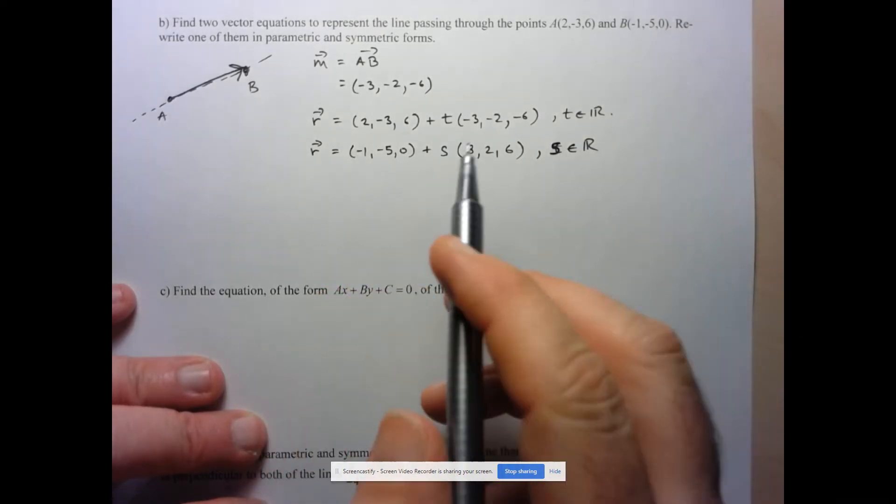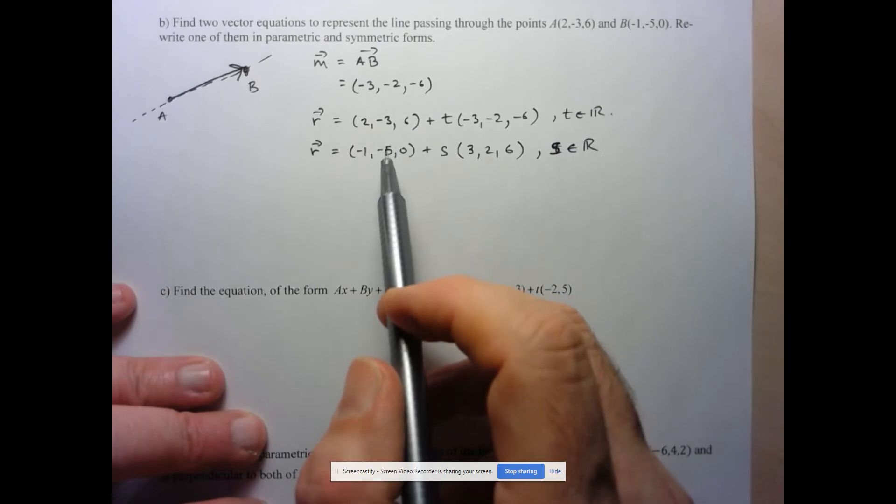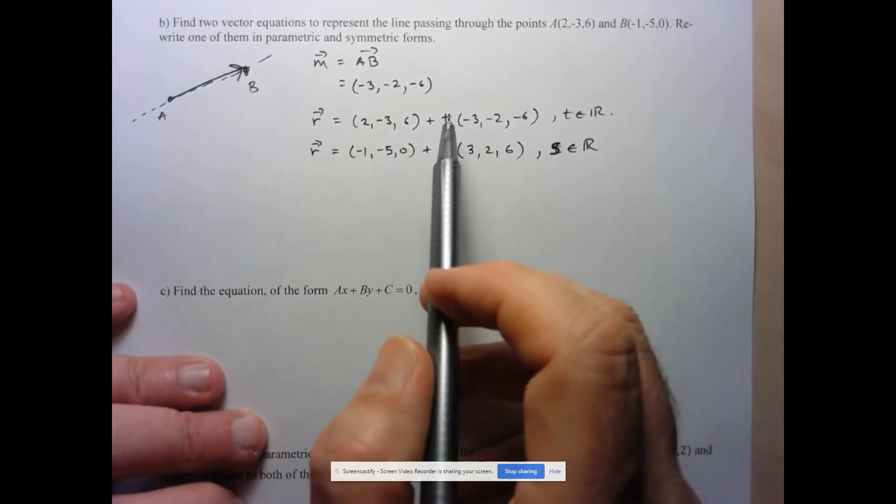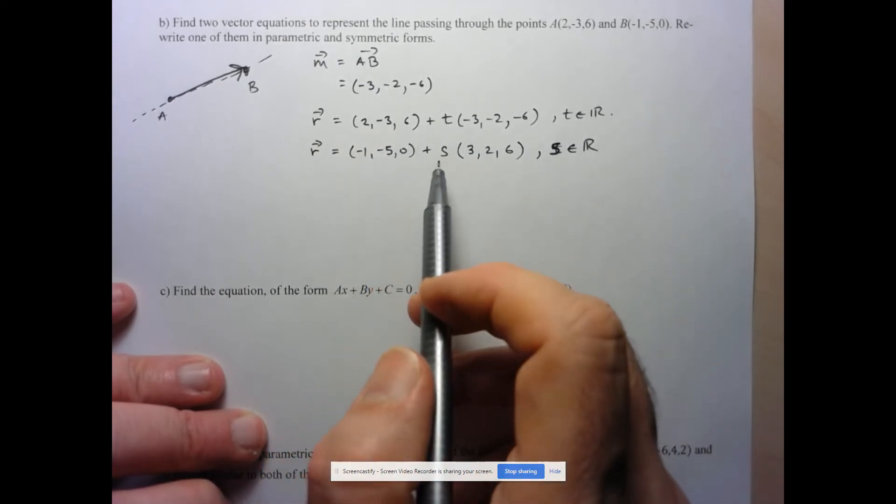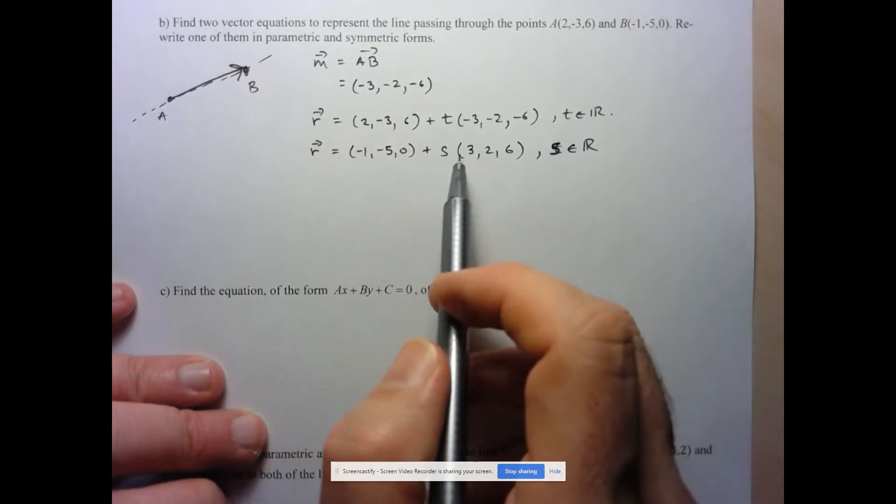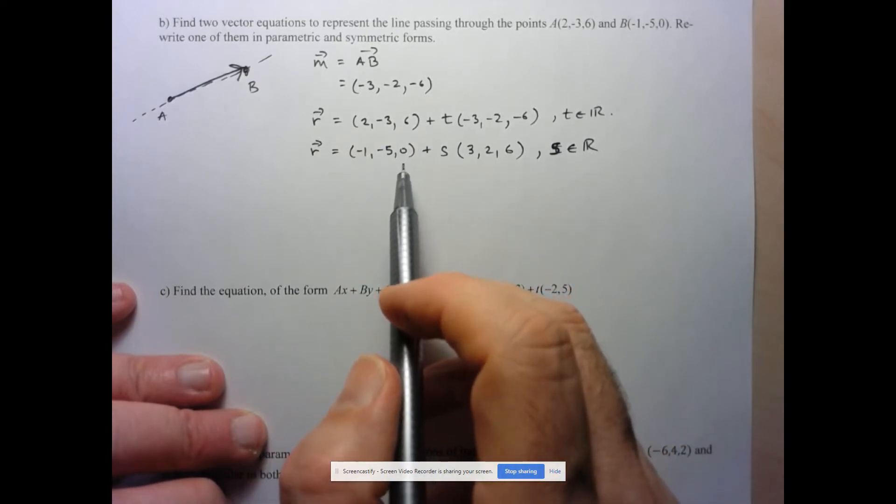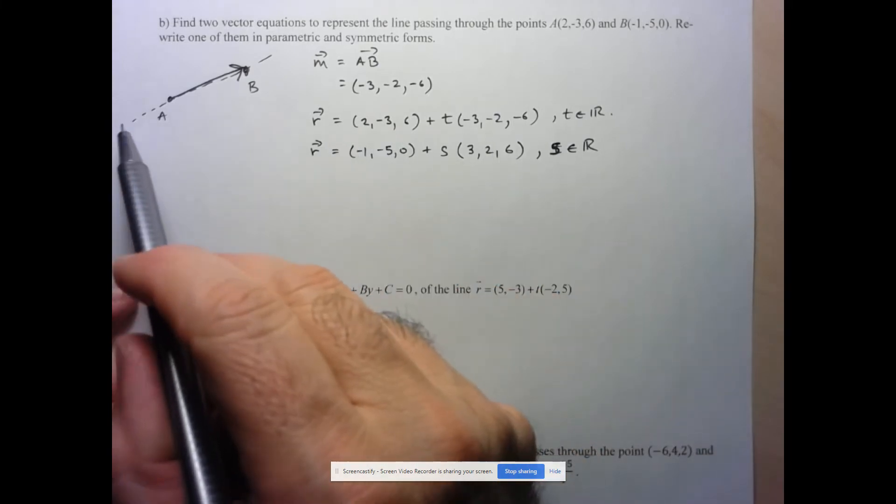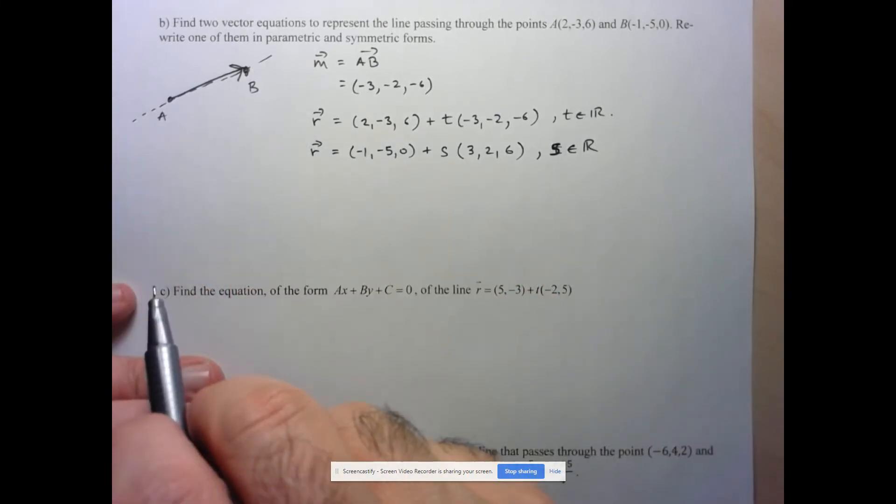Now, the thing to keep in mind is that these look very different, yet they still generate the same line. What that means is that a value of T equals 1 won't produce the same point as a value of S equals 1. We can see very clearly that those are going to produce different points, but the idea is this equation eventually produces all points on the line.